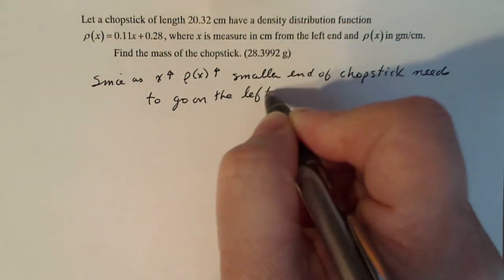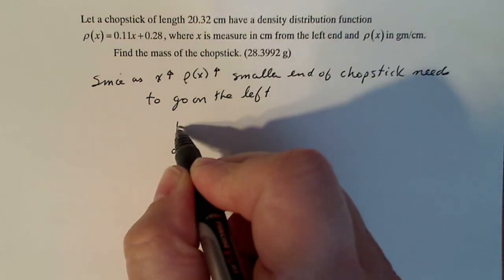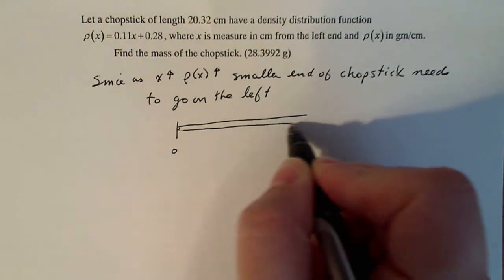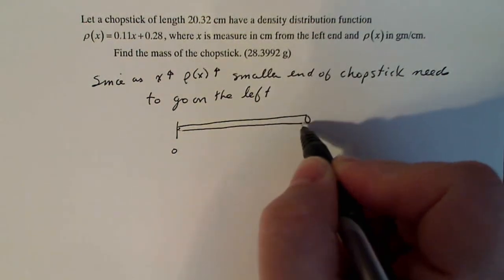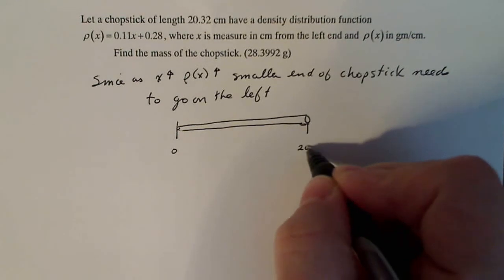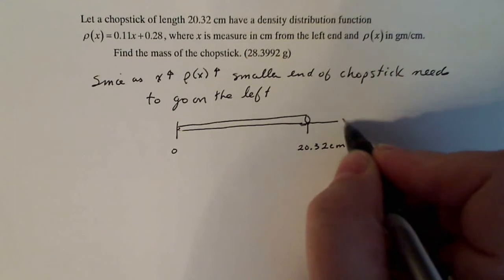All right. So if I say this is x = 0, my smaller end of my chopstick is here, and my wider end is down here. And I know that the length of my chopstick is 20.32 centimeters. This is the x-axis.